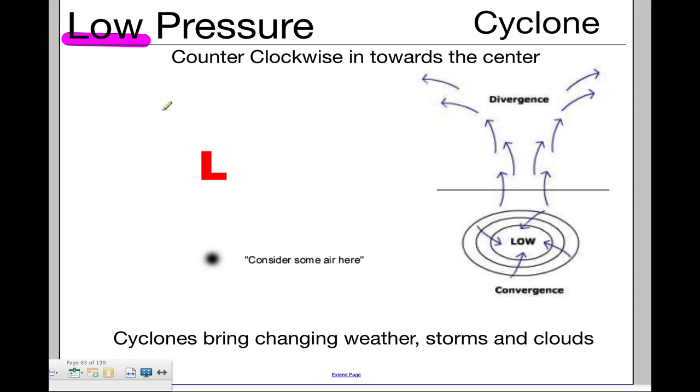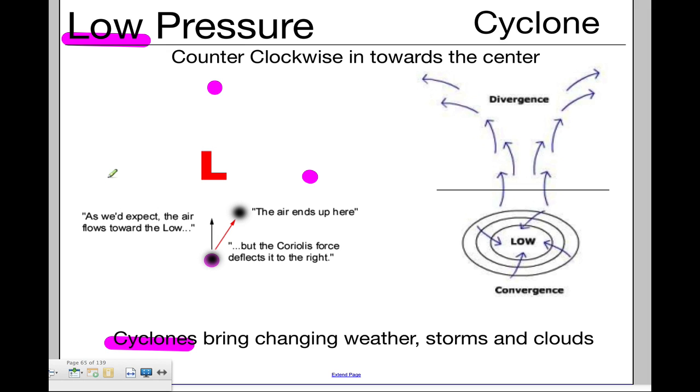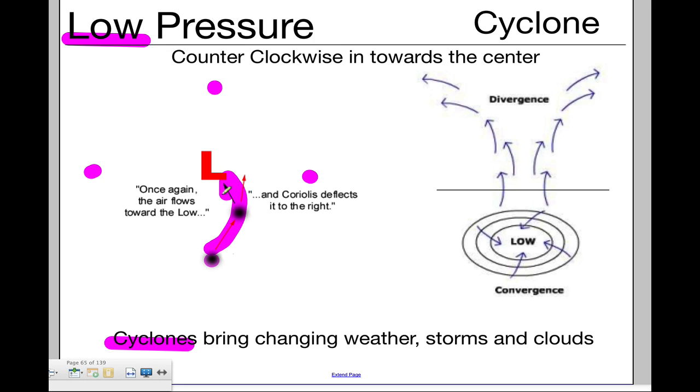Now on the other hand, a low-pressure system, which meteorologists will call a cyclone, it pulls in different air from all different areas around it. Some of that air will be warm, some of that air will be cold, some of that air will be humid or dry. And when those different types of air meet at the center, you have all sorts of different types of storms and disturbances that form.